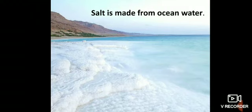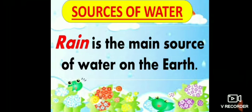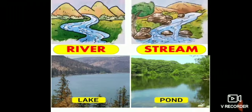We'll now discuss sources of water. Rain is the main source of water on the Earth. Rainwater gets collected in the rivers, stream, lake and ponds. The sources of our drinking water are rivers and streams, but before we drink, this water is cleaned, then we get it from taps at our homes.